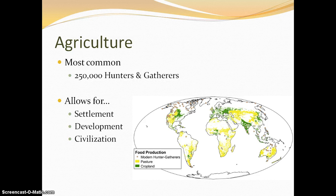Permanent human settlement allows for development to take place and a more sophisticated society — by that we mean civilization. More sophisticated civilization is able to take place because not all of your energy is expended trying to hunt and search for food.